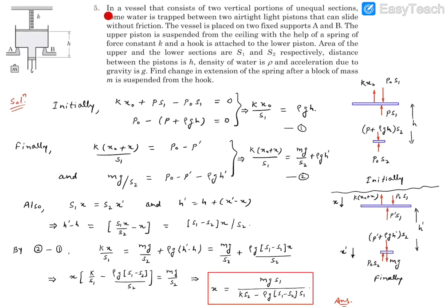Question 5. In a vessel that consists of two vertical portions of unequal cross-sections, some water is trapped between two air-tight light pistons that can slide without friction. The vessel is placed on two fixed supports A and B. The upper piston is suspended from the ceiling with the help of a spring of constant K, and a hook is attached to the lower piston. Area of the upper and lower sections are S1 and S2 respectively. Distance between the pistons is H. Density of the water is rho, and acceleration due to gravity is G. These are the terms in which we need to express our answer.